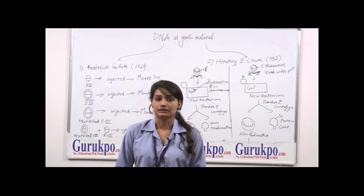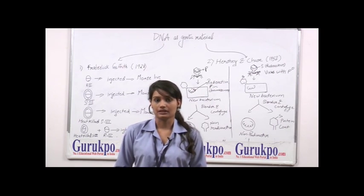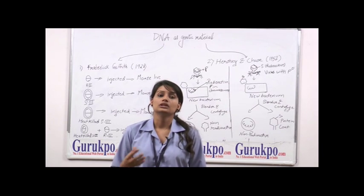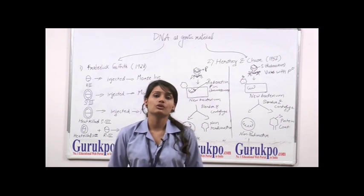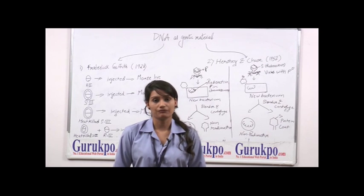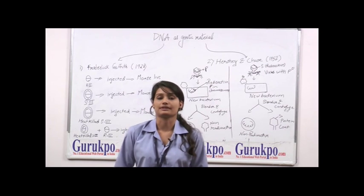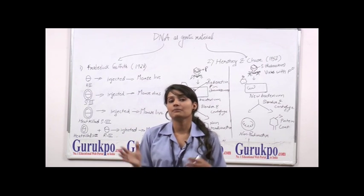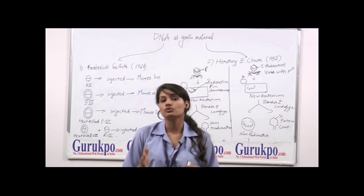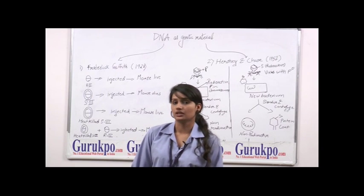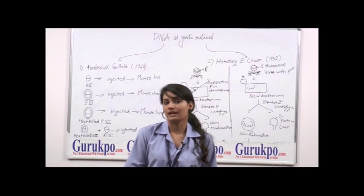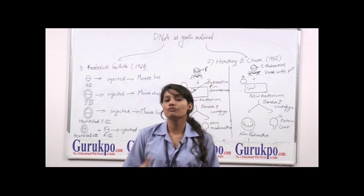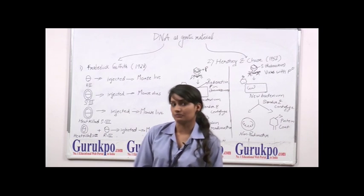We all know about DNA, i.e. deoxyribonucleic acid. DNA is found to be the hereditary material in almost all of the living organisms except few plant viruses. Various experiments were performed to prove DNA as genetic material, and I would like to explain a few of those experiments.